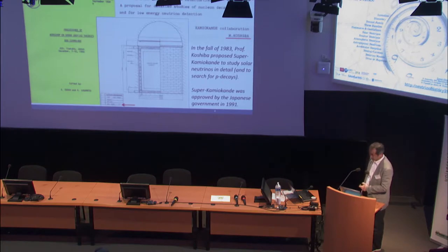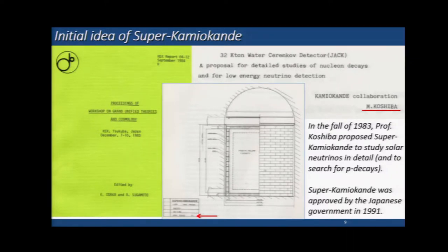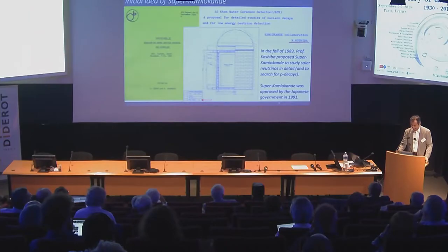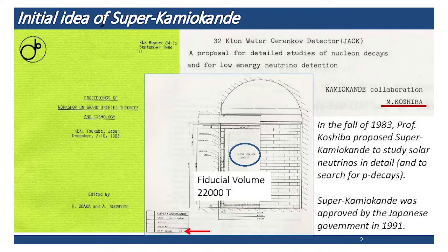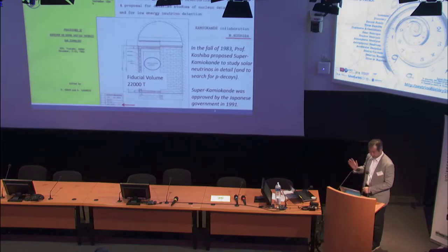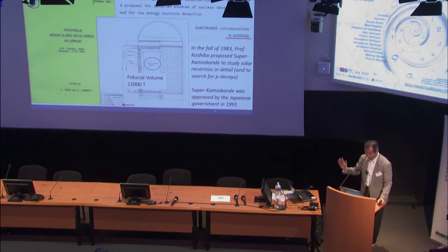At that time, this was the image of Super-Kamiokande. If you carefully read this paper, there is an initial 'YT', meaning Professor Totsuka was asked to draw this image by Professor Koshiba. Also, if you look at the fiducial volume written there: 22,000 tons. The actual Super-Kamiokande fiducial volume is 22.5 kilotons. So basically, Super-Kamiokande stuck to the original idea.